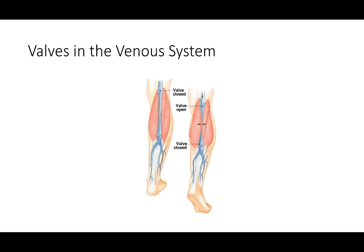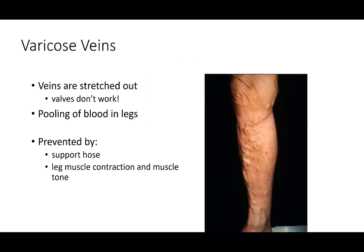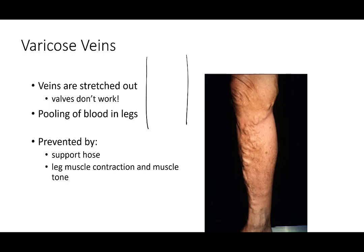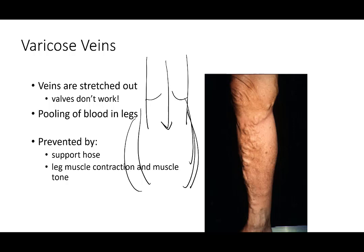If the valves in the venous system are incompetent — meaning they don't meet in the middle — you get varicose veins. When the vein becomes distended, the valves can no longer block backflow, blood pools and distends the vein further, making it much more difficult for blood to flow in the correct direction.